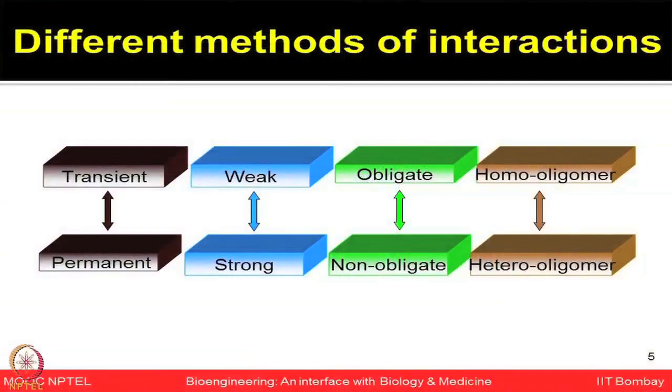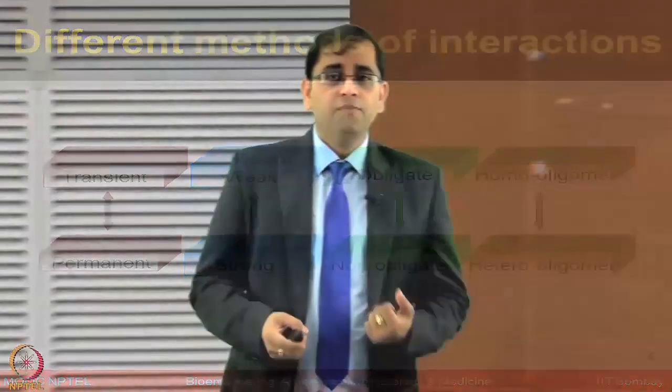To do that, people look for different types of interactions — sometimes interactions could be very transient, lasting just a fraction of a second, or they could be permanent and very strong. Interactions can also be divided into weak or strong, obligate or non-obligate, and could be homo-oligomers or multiple units coming together as hetero-oligomers.